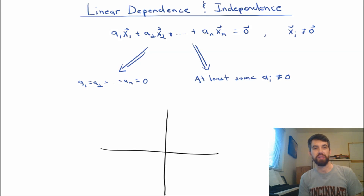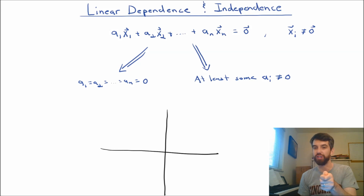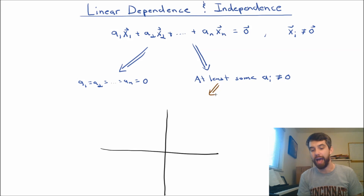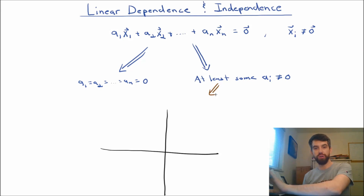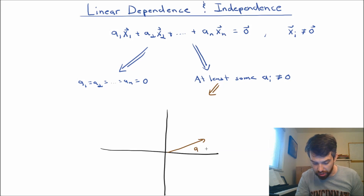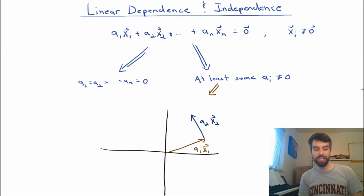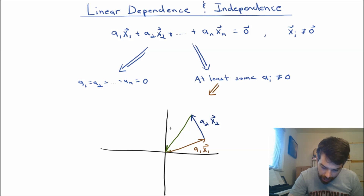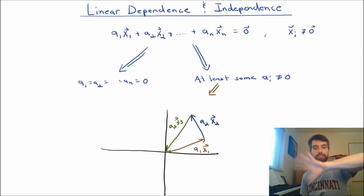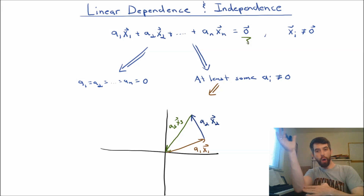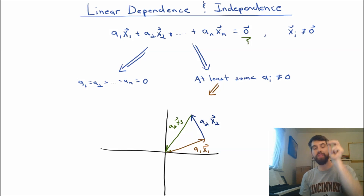Now let me try to understand these geometrically. The first case is boring — you go zero amount in the x1 direction, zero in the x2 direction, zero in the x3 direction, and you just never leave the origin. But in the second case, if I have a linear combination equal to zero, it means you first go along the vector a1*x1, then a2*x2, then a3*x3, and so on — going around in some geometric shape but ending up back at the origin, adding all vectors in a tip-to-tail way.